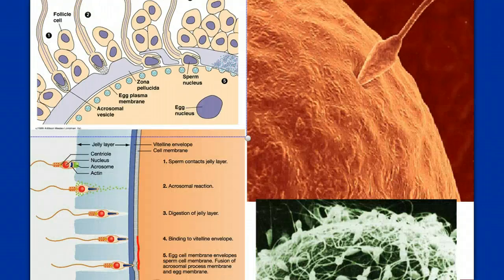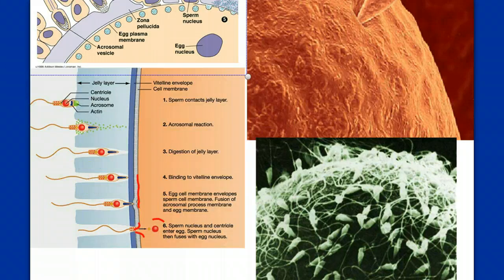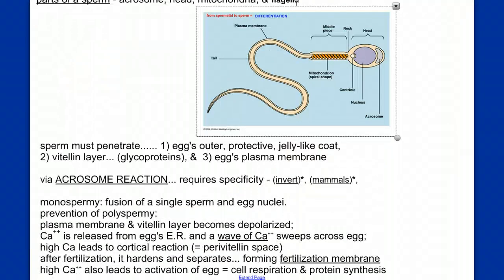Two things are happening here. The depolarization of the cell membrane that occurs when the sperm contacts and fuses with it is called fast block to polyspermy — it prevents more sperm from entering the cell. The wave of calcium release across the cell, leading to the cortical reaction and the formation of the fertilization envelope, is called slow block to polyspermy.